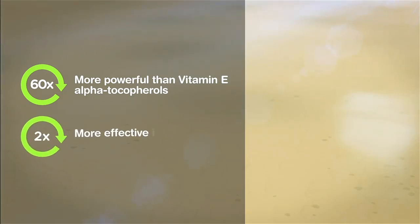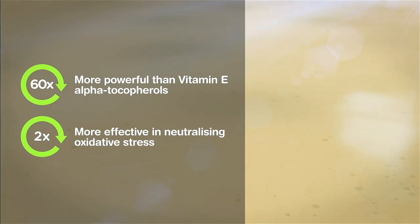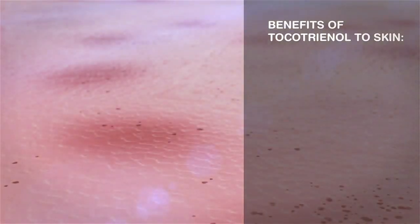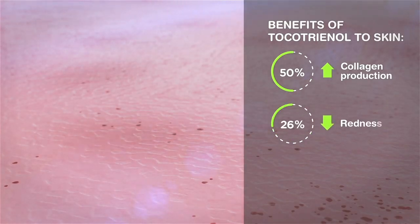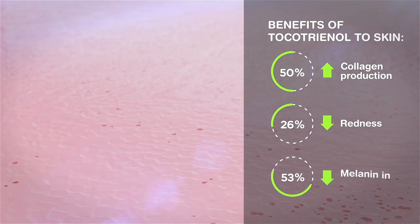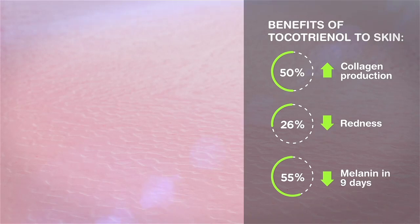Tocotrienols is also two times more effective in neutralizing oxidative stress caused by micropollutants. When products containing tocotrienols are applied to the skin, the skin shows an increase of collagen production by 50% and a reduction of redness by 26%. Products with tocotrienols are also known to help melanin reduction by 55% in 9 days. With all things considered, this makes tocotrienols an ideal option as it slows down the process of aging skin.